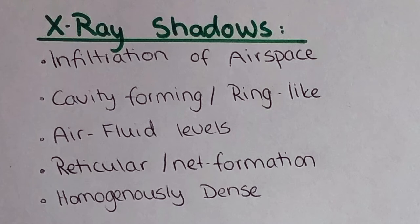X-ray shadows — so more black parts — speak for infiltration of the airspace or cavity-forming ring-like structures. Also sometimes you can see air-fluid levels, different net formations or reticular formations, or the entire lung can be homogenously dense. This, for example, can be seen in atelectasis of the main bronchus or in a pneumothorax.